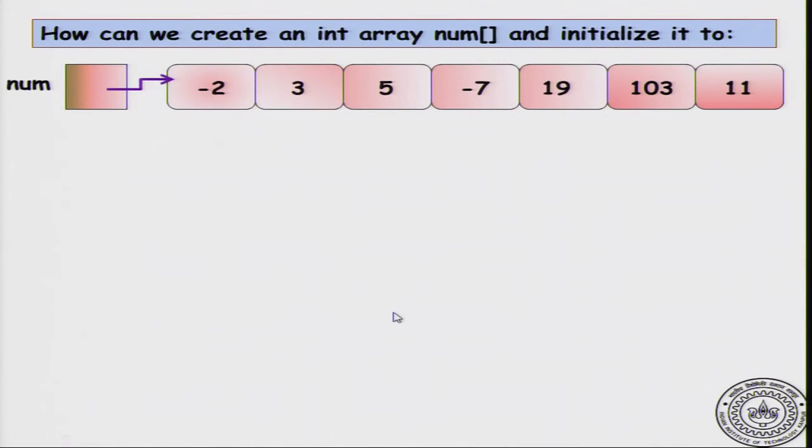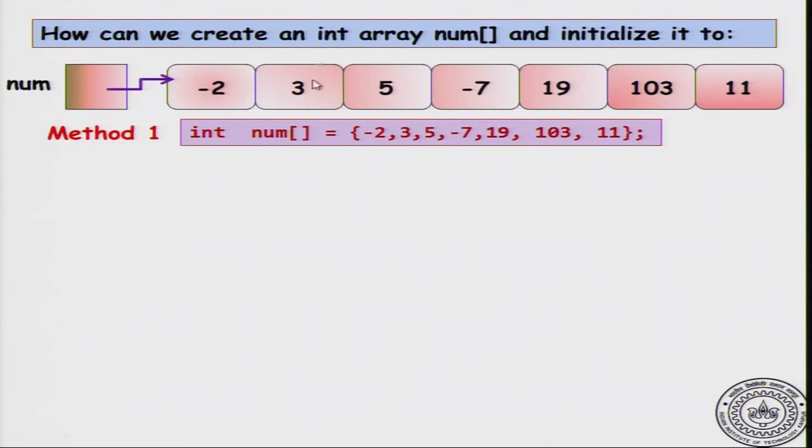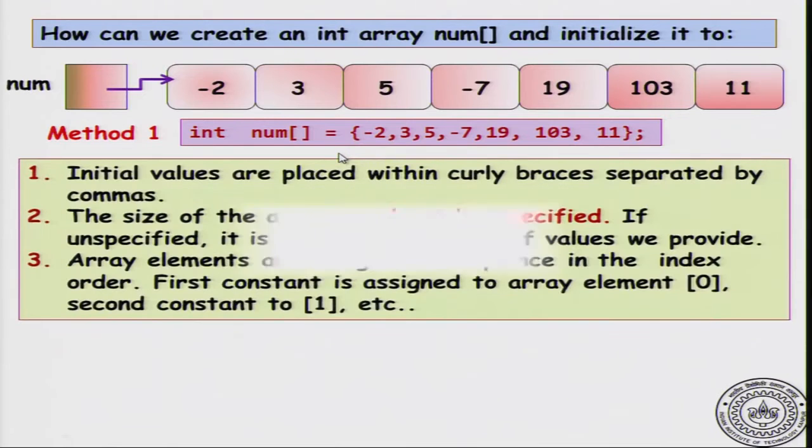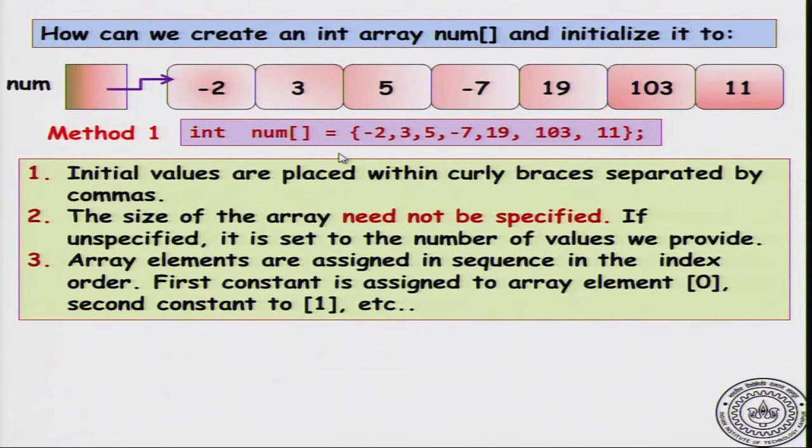C allows you two ways to do it. The first is I declare int num[] and then specify what are the initial values: -2 and so on up to 11 within curly braces. This is one way that C allows you to do this. The initial values are placed within curly braces and separated by commas. The size of the array need not be specified. I did not say that num has size 7. It will allocate an array with enough space to hold 7 integers. Array elements are assigned in the order that you specified. Num[0] will be -2, num[1] will be 3 and so on. It is done in a reasonable manner.